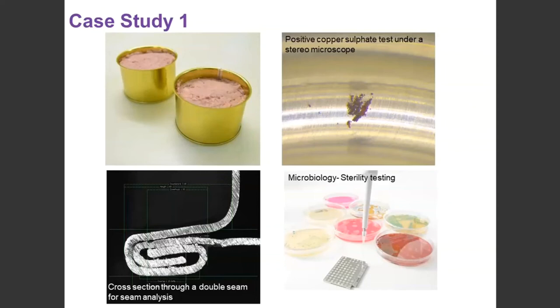We can also work with our packaging team on site, and they can look at the seam of the can. They take a cross-section through the can, and can look for faults or errors, such as an incorrect overlap, or a loose seam. Those may be causing gases to enter, or changing pressures within the can.